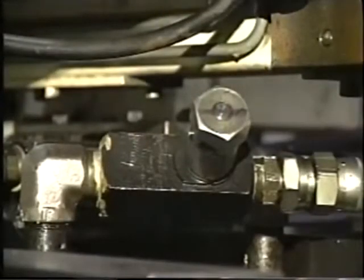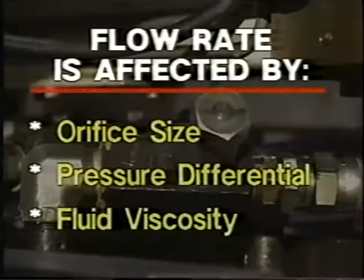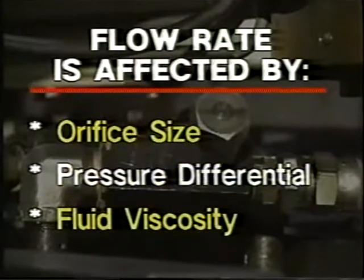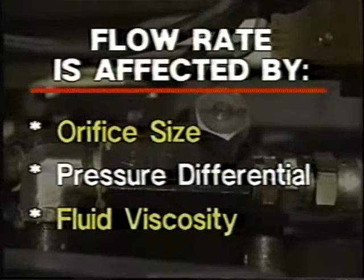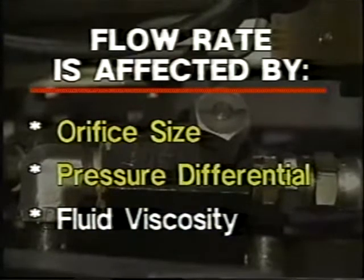The rate at which fluid passes through a flow control valve depends mainly on three things: the size of the orifice in the valve, the pressure differential across the valve orifice, and the viscosity of the fluid moving through the valve orifice.